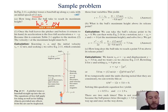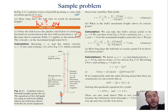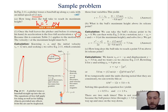Once the ball leaves the pitcher and before it returns to his hand, its acceleration is in free-fall. Anytime an object is not being pushed, pulled, or modified by any other forces, it's in free-fall. In the y direction, it's always going to have this negative G acceleration — negative 9.8 meters per second squared. At the max height, the velocity is going to be zero: the ball goes straight up, slows down, stops at the top, and then comes back down.